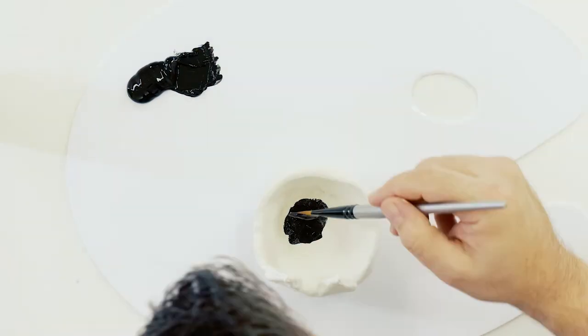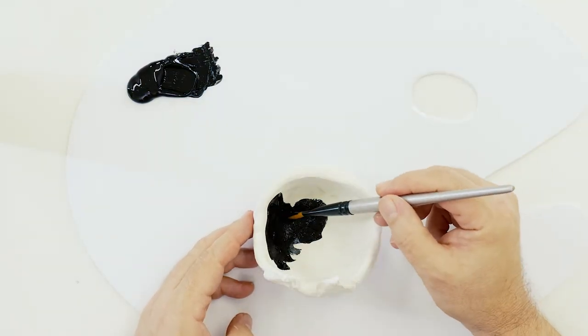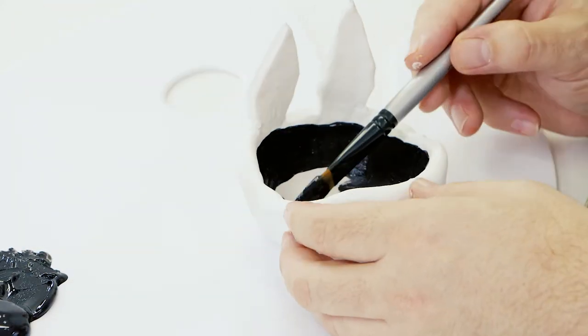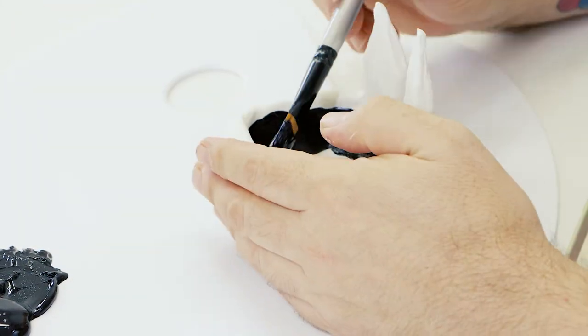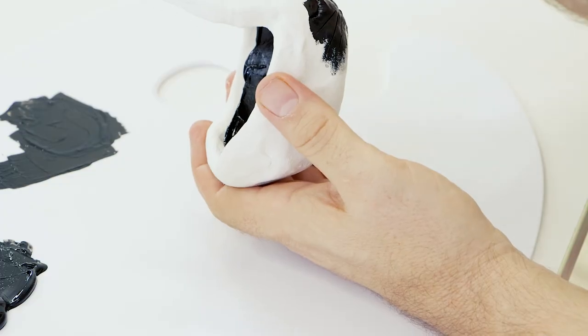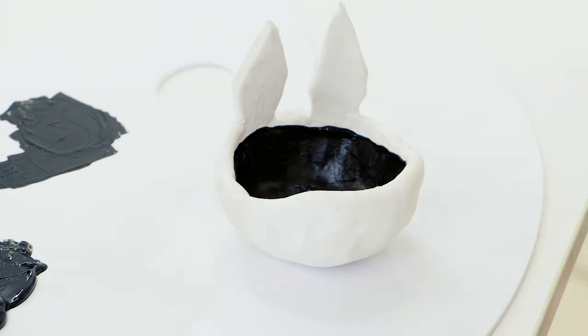Once our trinket dish is bone dry we can paint it and the first part is to apply the black into the cut part of the dish. Place the paint about one centimeter from the top of the edge. Next we can paint the black into the score details of the face. Allow these coats to dry.